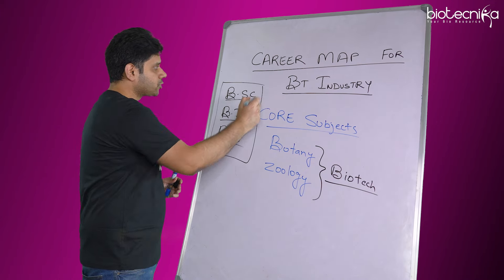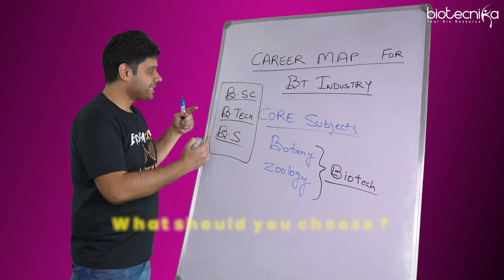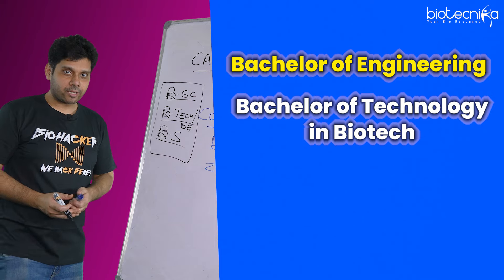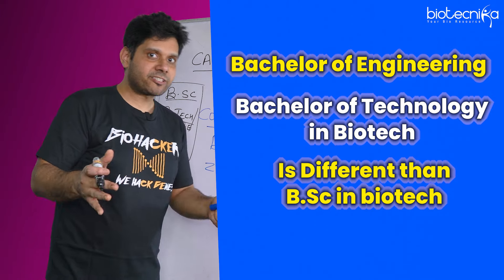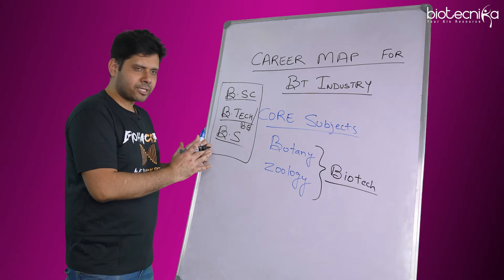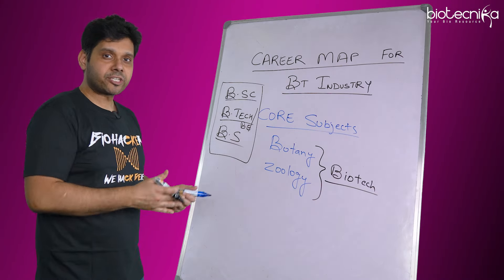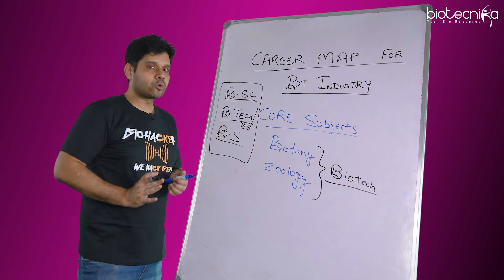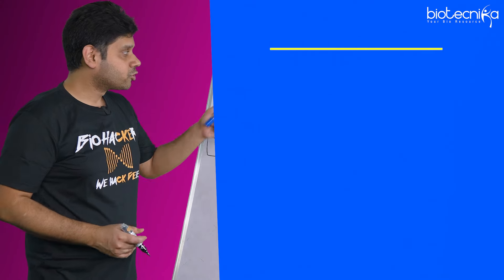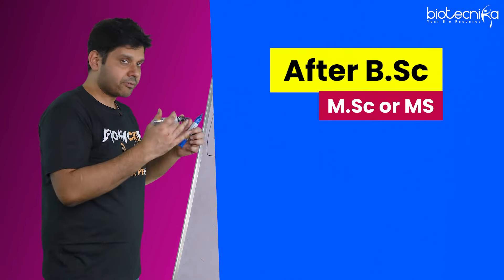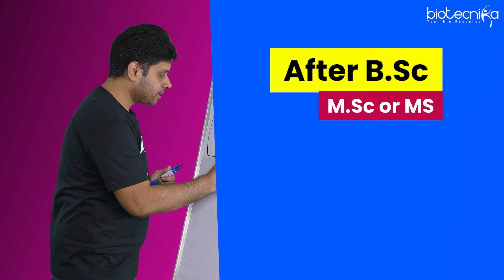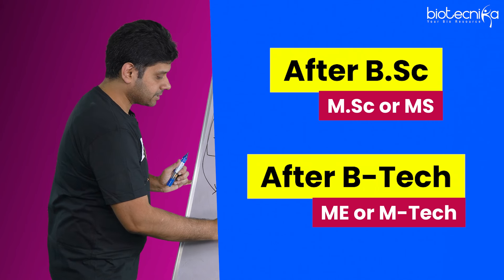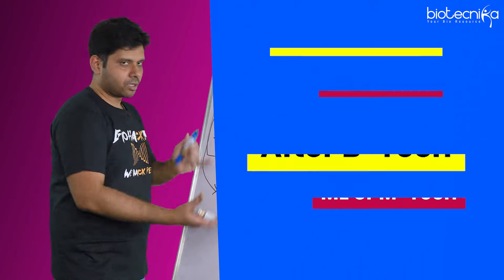The question is, what should you choose? Generally BTech or BE — that is Bachelor of Engineering or Bachelor of Technology in Biotech — is different from BSc in Biotech. I have already made a video on this, you can check it out. To summarize quickly: if you do BTech, you are on the engineering side of biotech and can get absorbed into the industry faster. BSc takes you towards the research side. After BSc you do MSc or MS, and after BTech you generally do ME or MTech.